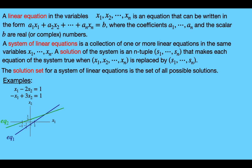Now we can graph the second equation, represented by eq2 — it's this green line here. The only solutions for the second equation are going to lie on this green line. So if we want a solution for the system, it has to be a solution for both the first and second equations, meaning it has to lie on both lines.